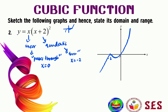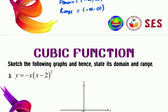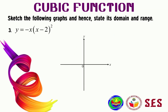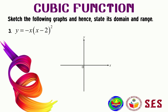When sketching case two, make sure you only have two x-intercepts, not more than two. The domain for this function is negative infinity to positive infinity, and the range is also negative infinity to positive infinity. Let us proceed to question number three.